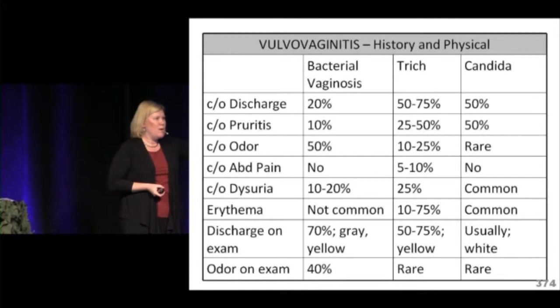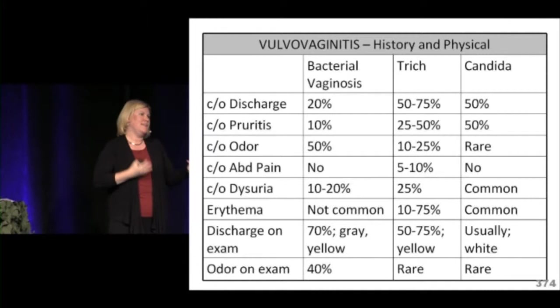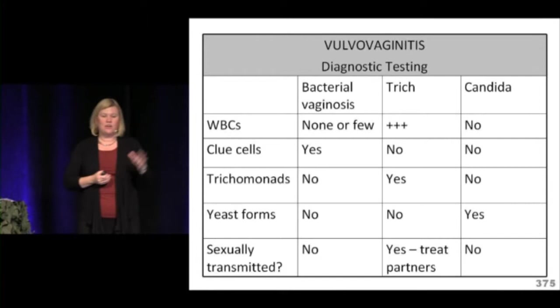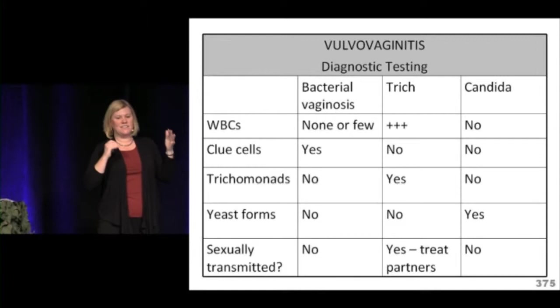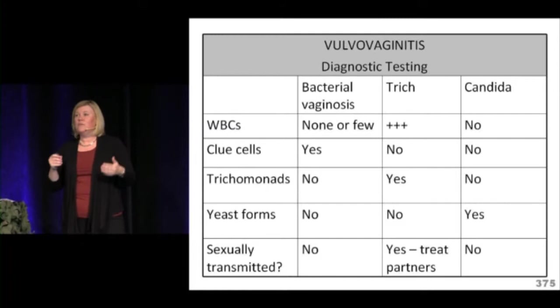A summary chart covers the three vulvovaginitis organisms — BV, trichomonas, and candida — comparing symptom incidence, exam findings, and diagnostic tests. Clue cells indicate BV; motile protozoa indicate trichomonas; yeast forms indicate candida. The only STD of the three is trichomonas, requiring treatment of both partners.